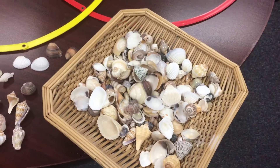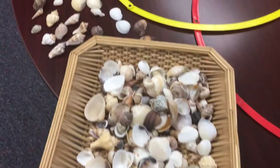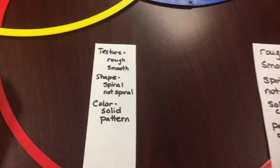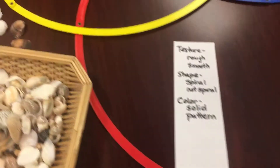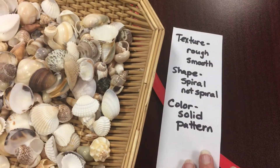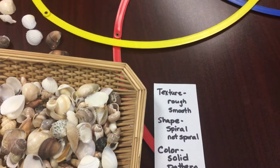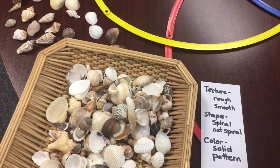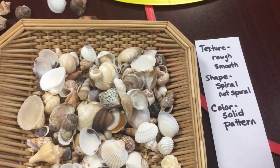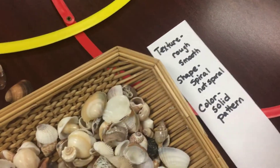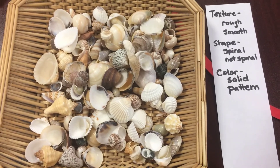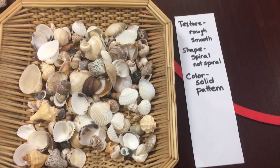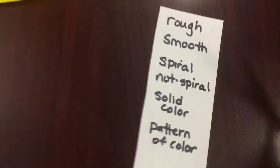Here I have some ideas and strategies when you go to plan your classification activity. The first thing you want to do is list all of the attributes and their characteristics. So for these shells, we have one attribute which is texture. The two characteristics of that attribute are rough or smooth. So I can classify things — they're either rough texture or smooth texture. And then for shape, we have spiral or not spiral. And for color, we have either a solid color or a pattern. So now from here, we're going to choose our characteristics.